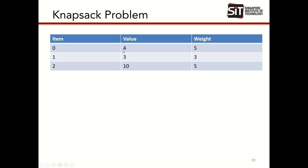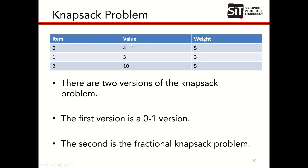In this example we have three items — item 0, 1, and 2 — with values 4, 3, and 10 respectively. Item 0 weighs 5 kg, item 1 weighs 3 kg, and item 2 weighs 5 kg. There are two versions: the 0-1 version where you either take the item or you do not, and the fractional knapsack problem where you can take part of the item. The greedy algorithm gives an optimal solution for the fractional knapsack but not for the 0-1 version.